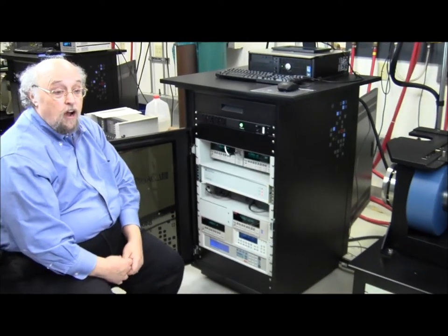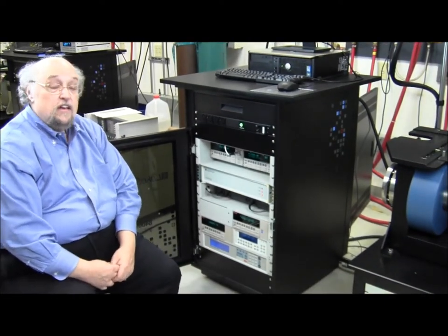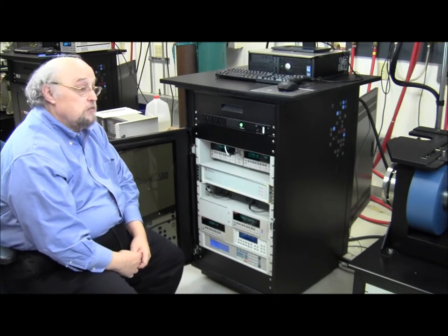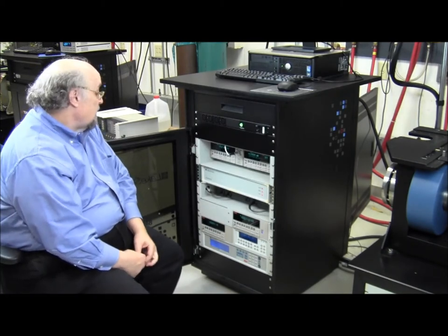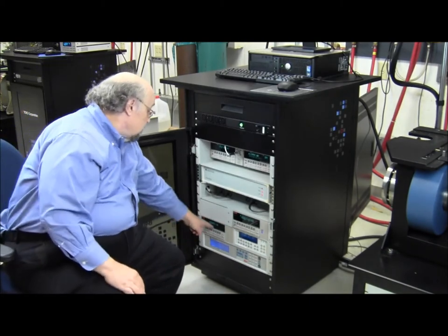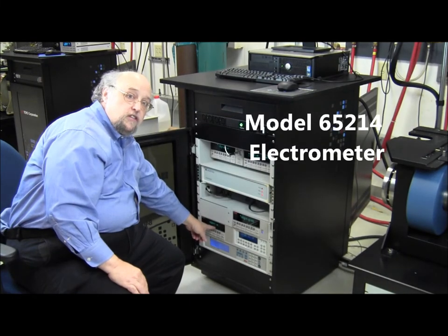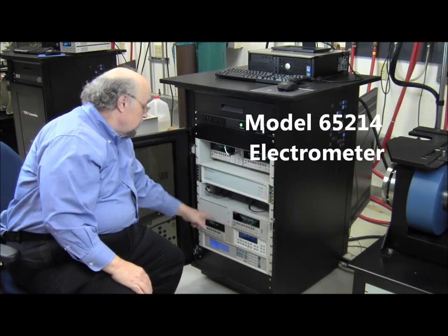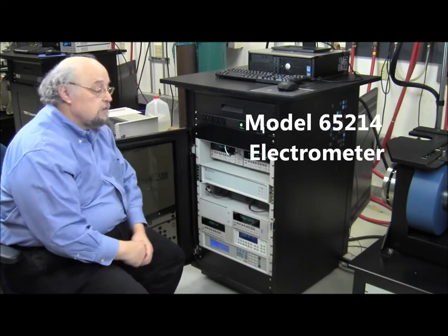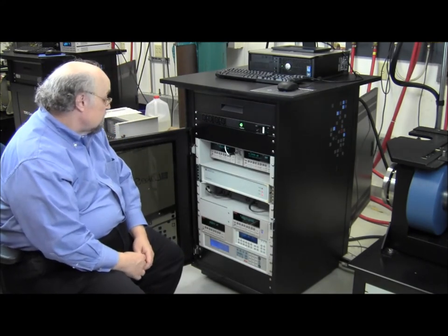If you need to measure higher resistances you can add the high resistance option to the system. That does two things. One, it gives you a Keithley electrometer for measuring the current. So we make sure that when we apply a current, we measure the same current and make sure there's no leakage in the system.